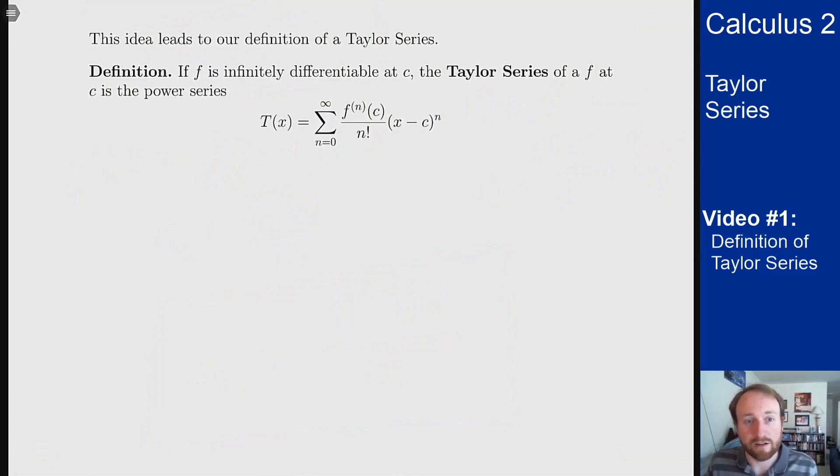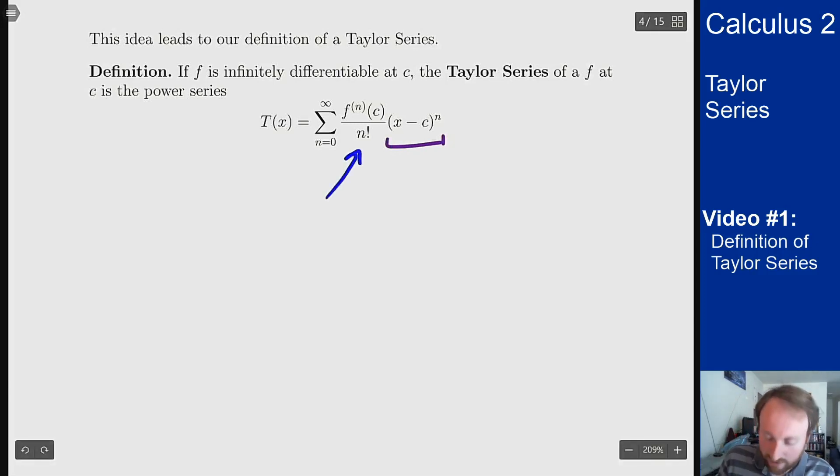So we define a Taylor series centered at c to be the following. It's T of x which is the power series centered at c so we have x minus c to the n here. And then our coefficients here are exactly the things we had before. The coefficients are the nth derivative at the center point divided by n factorial which matches up with the a_k we found in the last example.